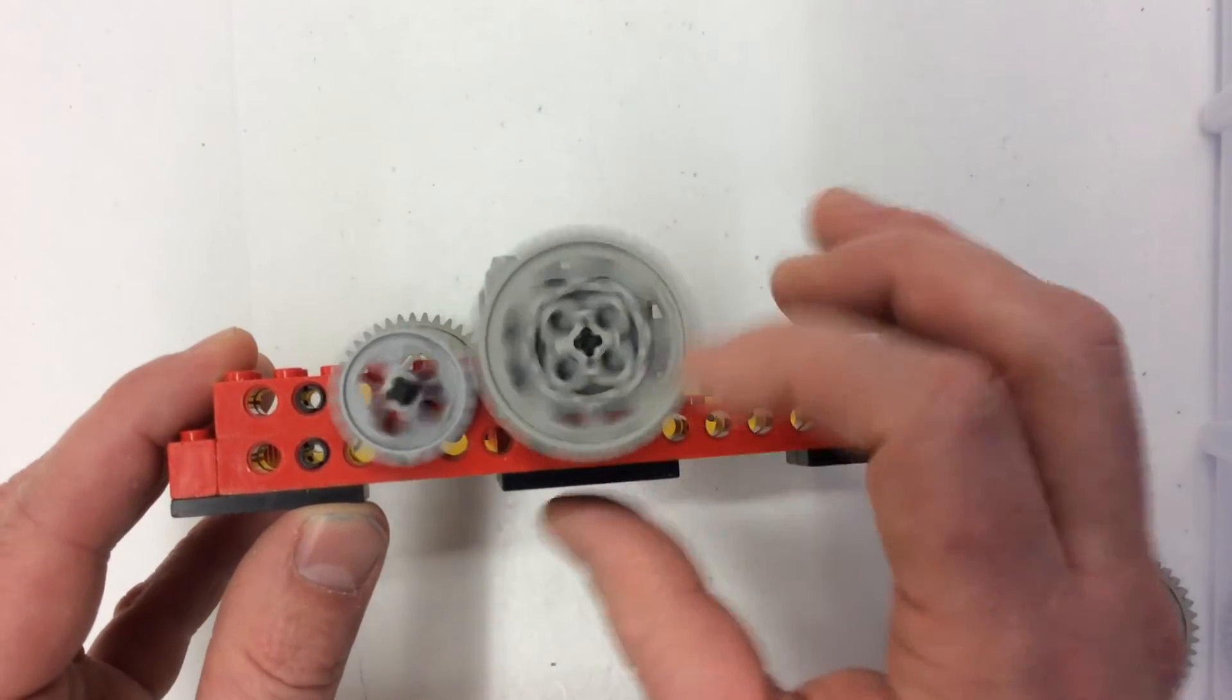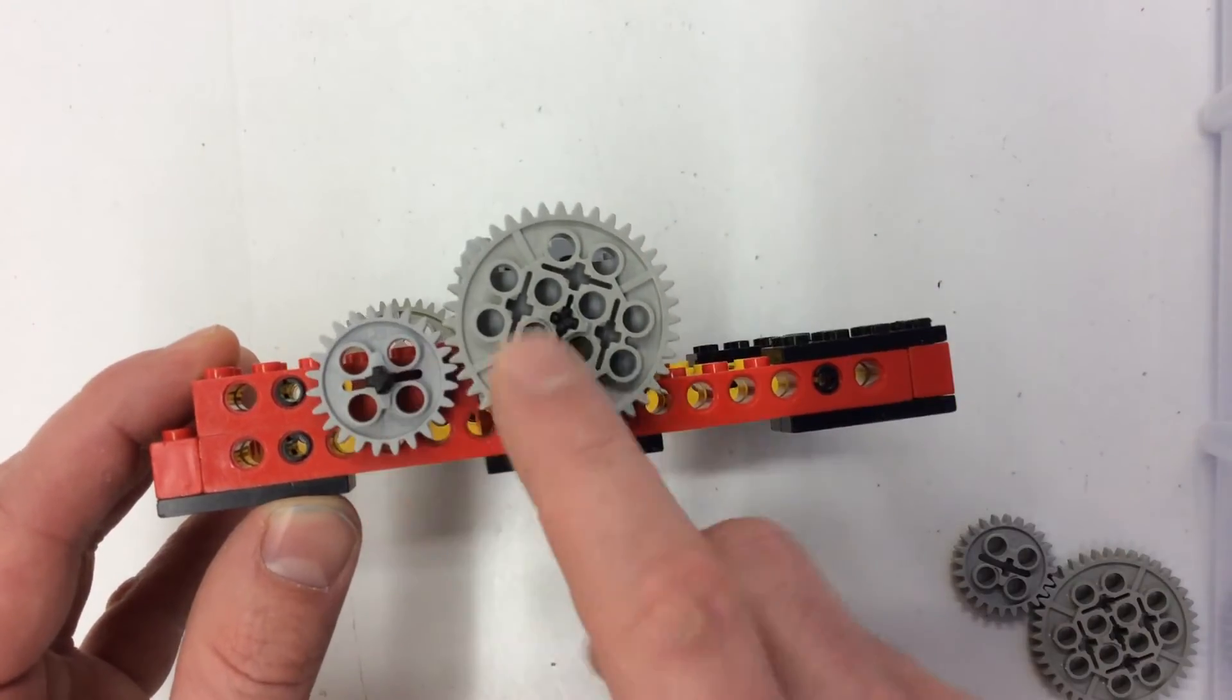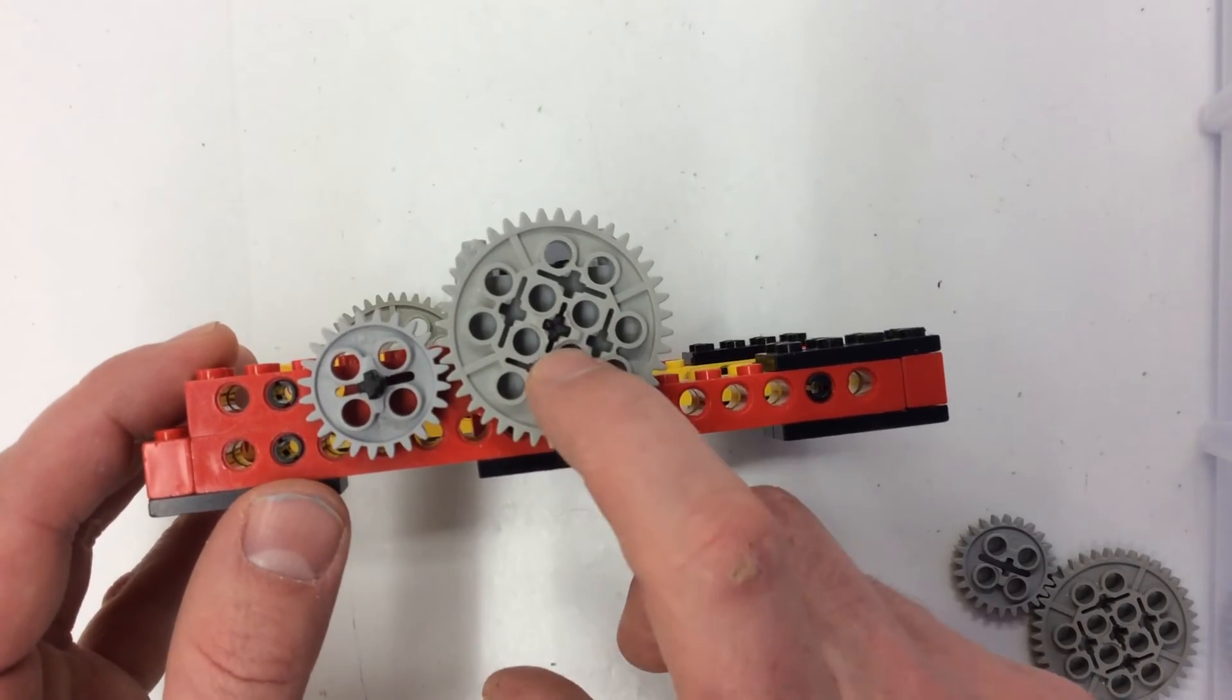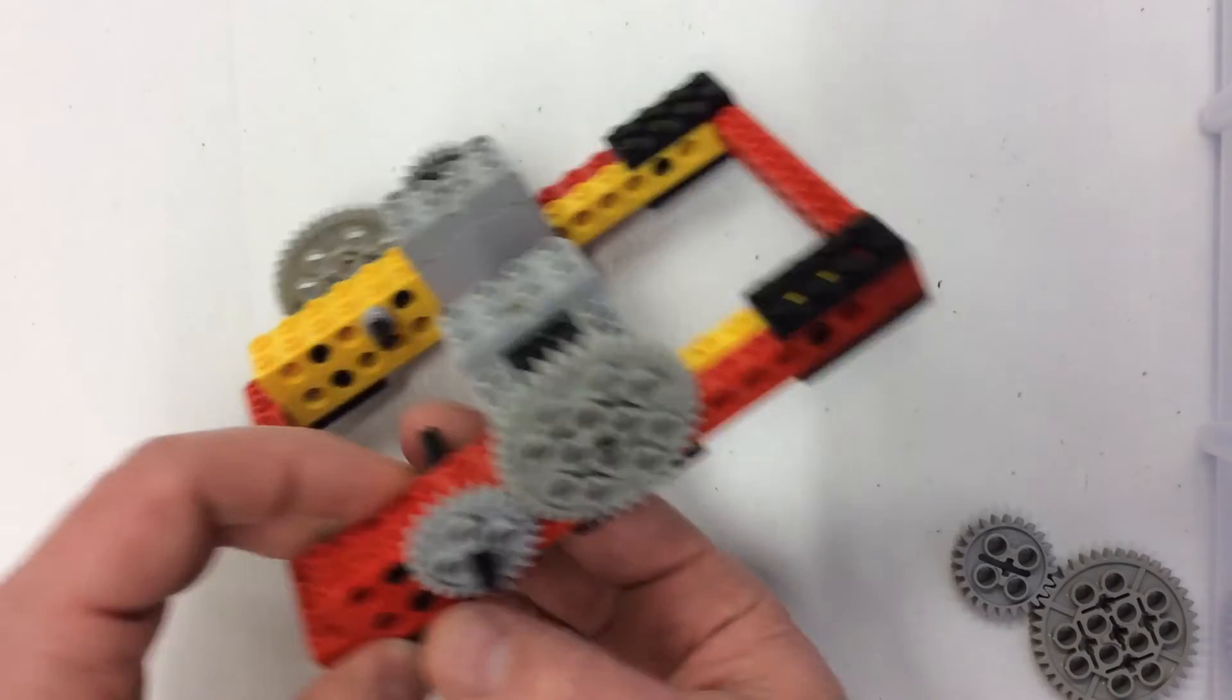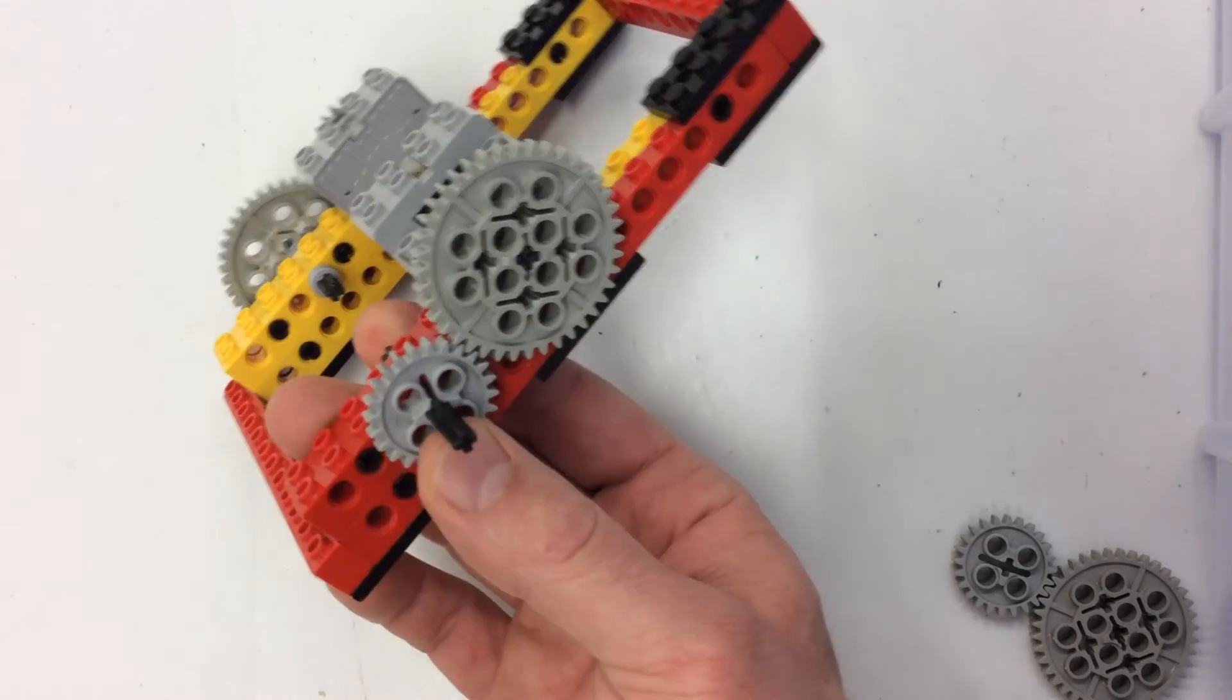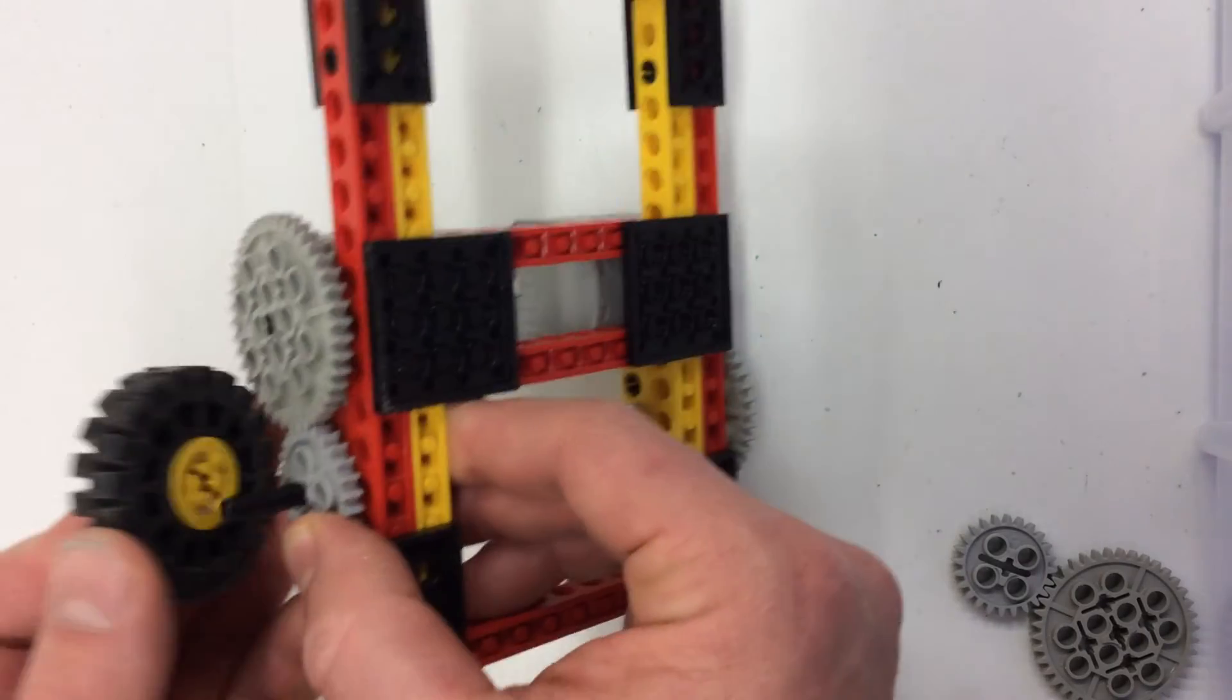Once I have that set up, I have it set up where the big wheel, big gear I should say, is on my motor, and my little gear is going to be on my wheel. So, I'll take my wheel, and I'll add it to there.